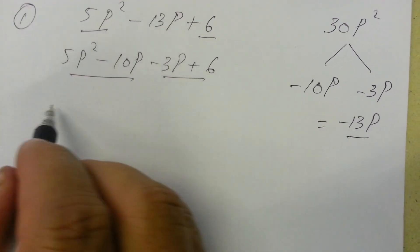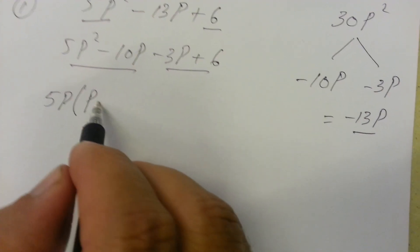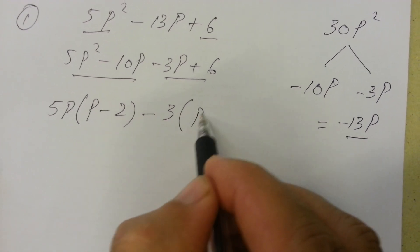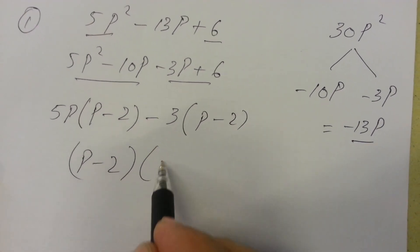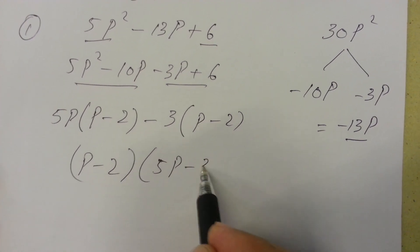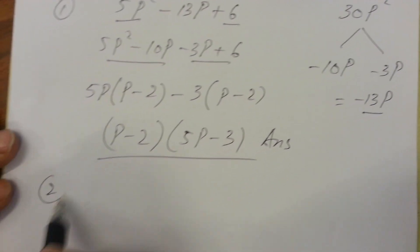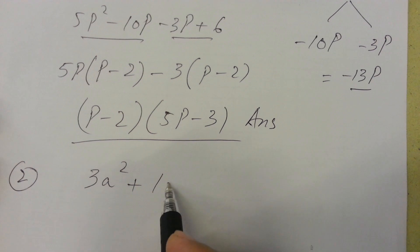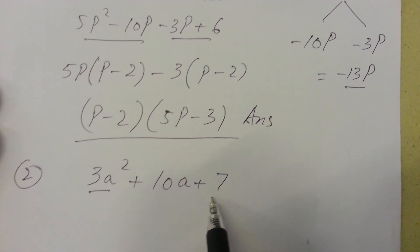Now taking common 5p in the first two terms, there will be 5p(p - 2) - 3(p - 2). Taking p - 2 again common, then (5p - 3)(p - 2). Question 2: 3a² + 10a + 7. Multiplying first and the last term...